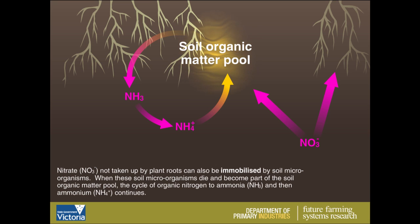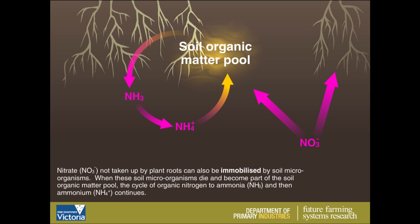Nitrate not taken up by plant roots can also be immobilised by soil microorganisms. When these soil microorganisms die and become part of the soil organic matter pool, the cycle of organic nitrogen to ammonia and then ammonium continues.